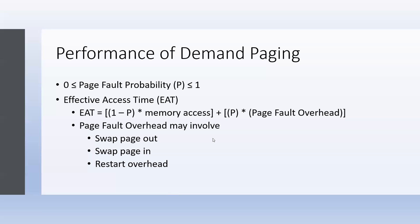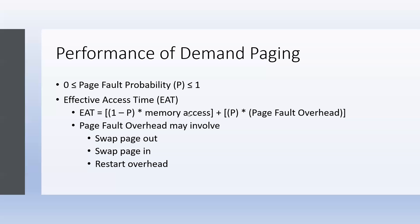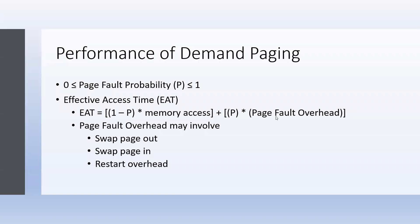Let's do an example of the performance of demand paging. If memory access time is 200 nanoseconds, and the average page fault service time — that is, the page fault overhead — is 8 milliseconds, we can apply the formula.